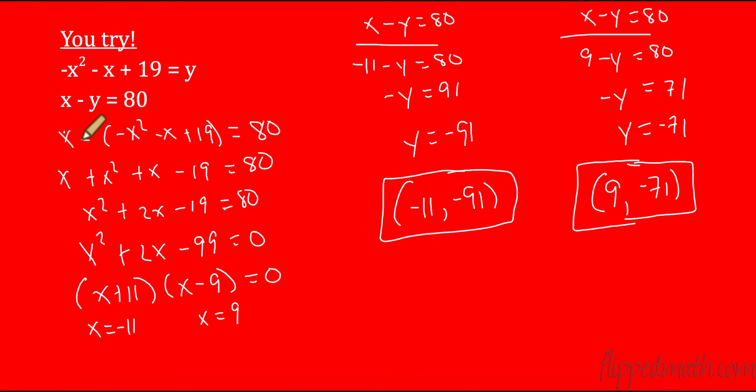Okay. So on this one, I plugged in here. I had x minus y minus. This is very important. Now, I put this in parentheses. This whole big thing goes in here. The reason I put in parentheses, I'm distributing a negative. So that was positive x squared plus x minus 19. I combined like terms. I got two x's. Subtracted 80. I got negative 99. Two numbers that multiply to negative 99 and added 2 are 11 and negative 9. So when I use the zero product property, I got negative 11 and positive 9. I chose this second equation. It seemed a little bit less involved. I plugged in negative 11. I got negative 91. I plugged in 9 and I got negative 71. So if you want to pause and look at that, feel free to do so.